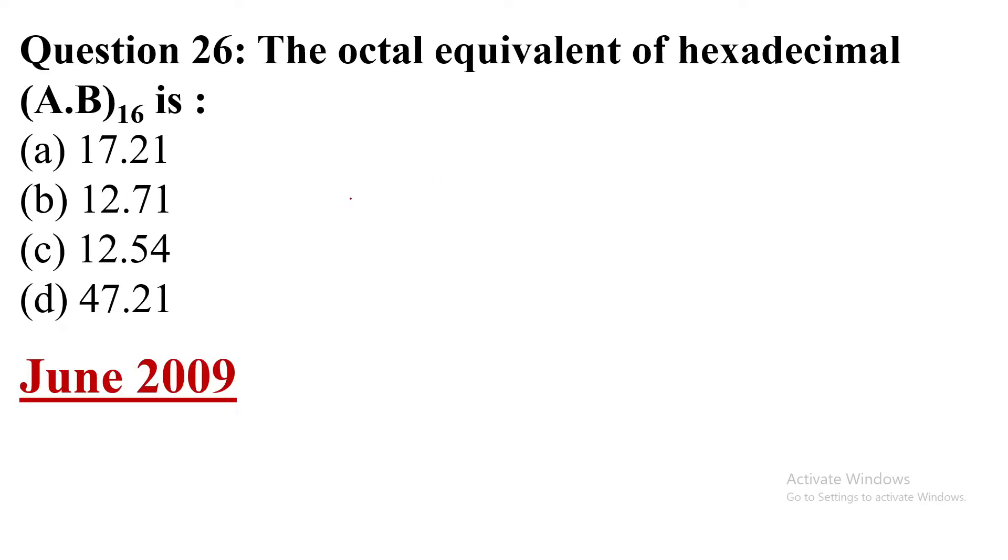Hi everyone, in this video I am going to share with you a UGC NET exam CS question. This question was asked in June 2009. This is question number 26: The octal equivalent of hexadecimal (A.B)16 is? The number is given in hexadecimal form and we need to convert it to octal.